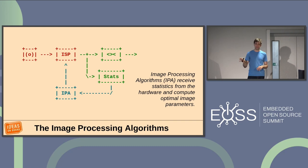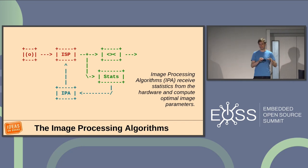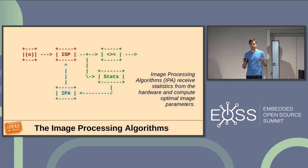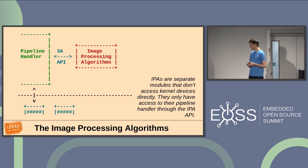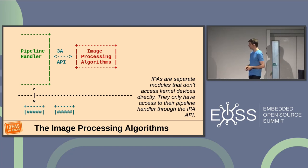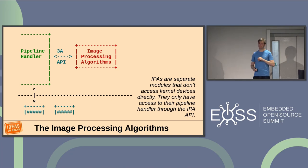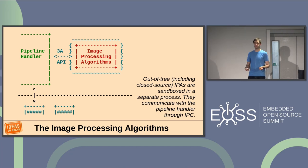Your IPA module will typically consume statistics computed by the hardware — because at high resolution and high frame rates, computing statistics with the CPU is expensive. It calculates the parameters to be applied to the next frame. In a simplified way: the statistics show the image is too dark, so push the exposure time up. The IPA modules are separate loadable modules, pluggable, completely isolated from the rest, and only communicate with the pipeline handler — they never access hardware directly.